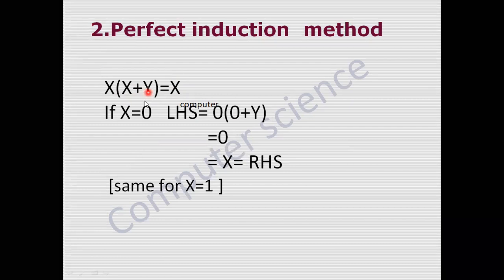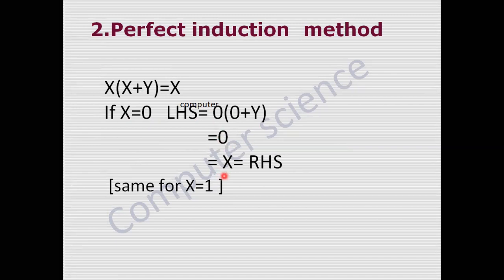x and y are the variables. First, assume x equals zero. For that, the LHS becomes: zero into (zero plus y) equals zero. Zero plus y equals y, and zero into y equals zero. This is the properties of zero and one. From this we can get the result as x, which is the RHS.